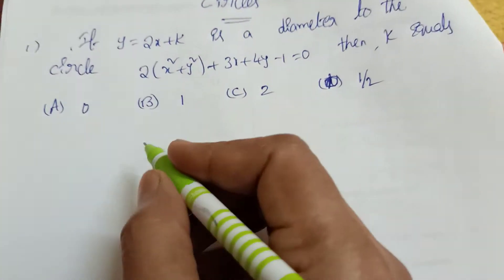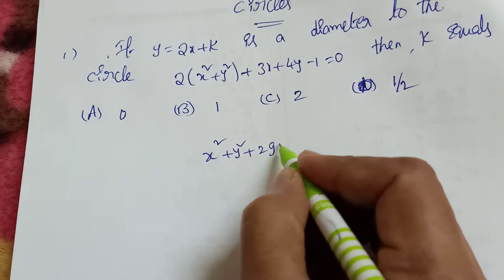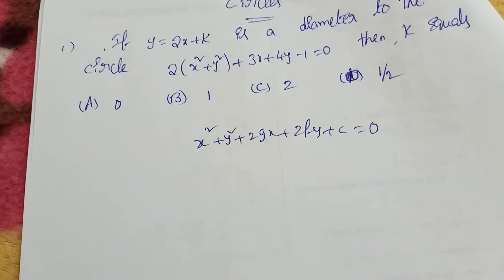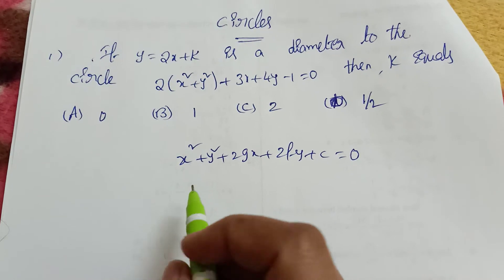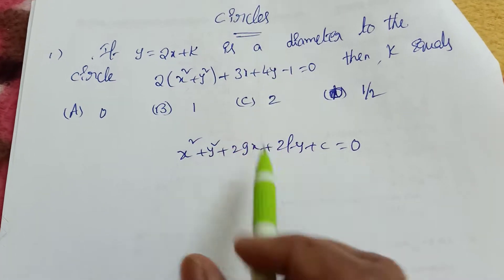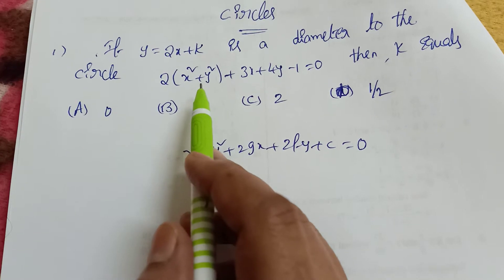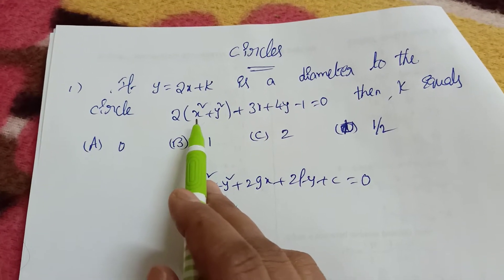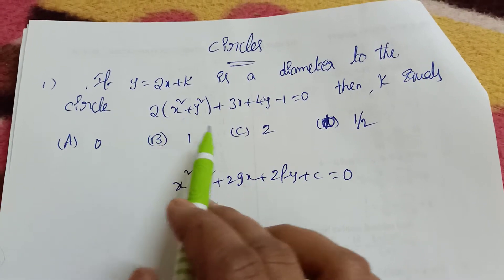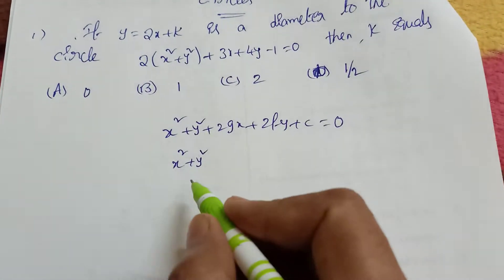First, let me recall the general equation of a circle: x² + y² + 2gx + 2fy + c = 0. One important point — the coefficient of x² must be 1. Here the coefficient is 2, so we divide the whole equation by 2.